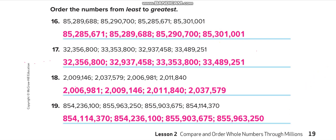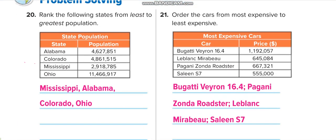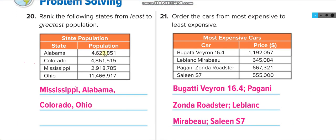Here they give the population of four states. You have to find from least to greatest. The least one is this one: 2 million. Then 11 million is the greatest. 4 million 400,000 is the greatest one. After that Alabama, then Colorado, and Ohio.